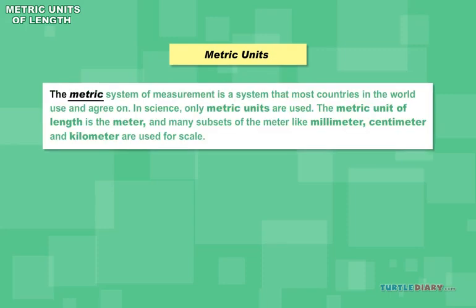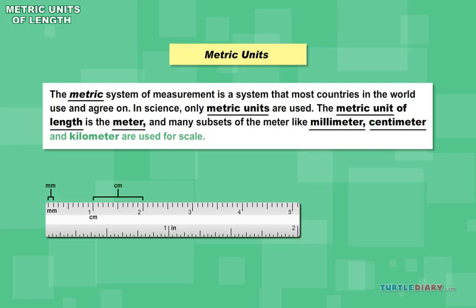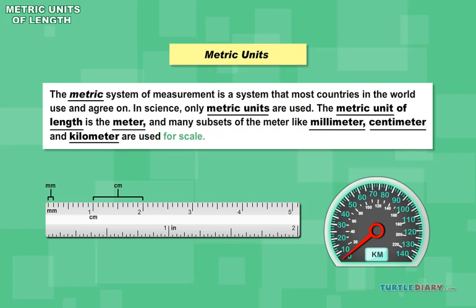The metric system of measurement is a system that most countries in the world use and agree on. In science, only metric units are used. The metric unit of length is the meter, and many subsets of the meter like millimeter, centimeter, and kilometer are used for scale.